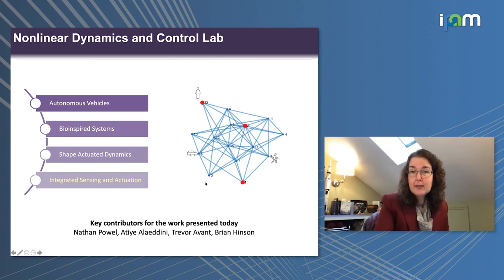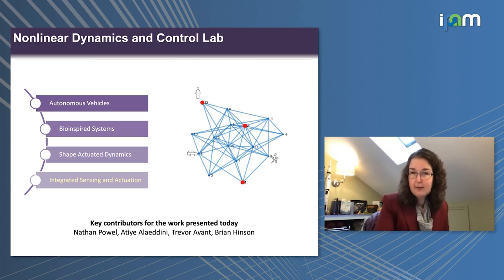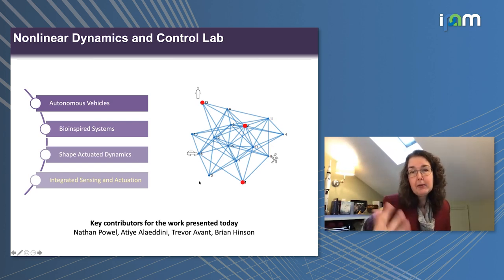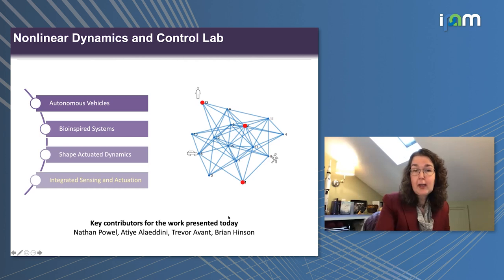The diagram on the right is a good framework for thinking about the tools I'll discuss today. You can generalize the network modality and graph-theoretic structure to cover a variety of things. The nodes could be people standing in place or moving around, or vehicles in the system, and you want to guarantee that you'll get particular information or know the quality of the information. Key contributors to this work include my former students Nathan Powell, Atiyah Aladini, Trevor Avant, and Brian Hinson.